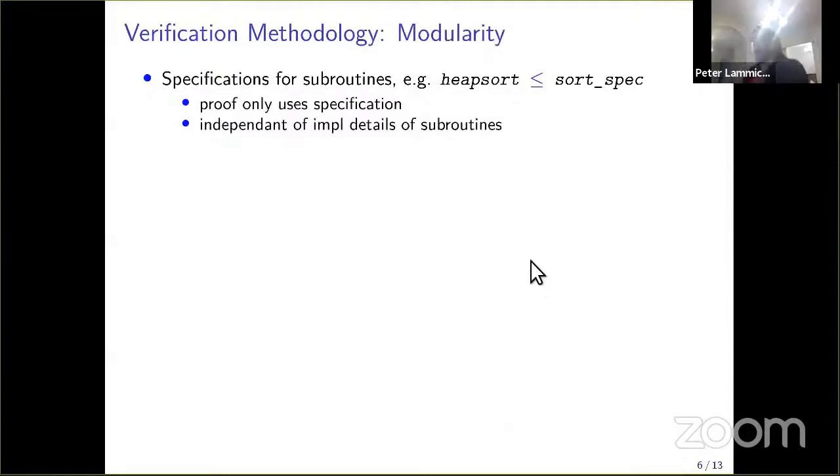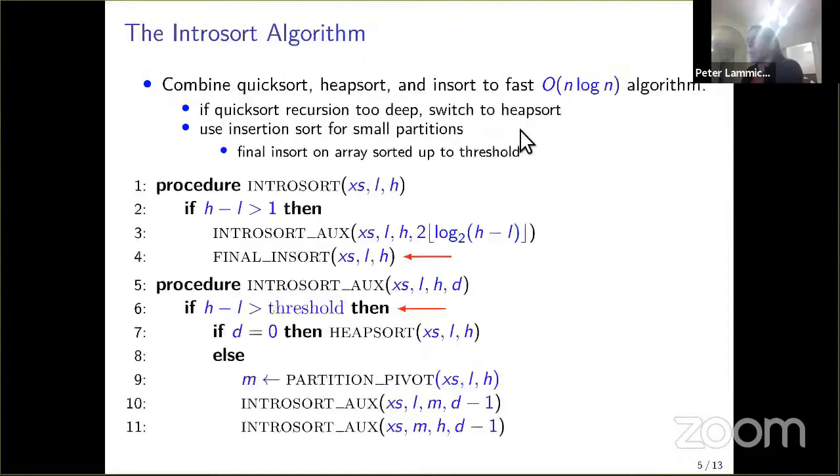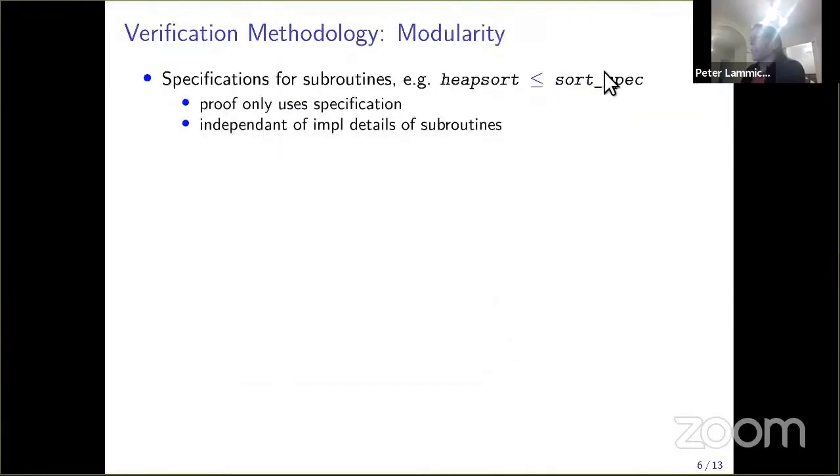How do we verify this? One important thing both for implementation and verification is modularity. We prove specifications for subroutines. In the algorithm that uses the subroutines, we only use the specification. For example, heap sort. What do we need to know about heap sort? We only need to know it sorts the array. This is independent of how heapsort is implemented in detail.